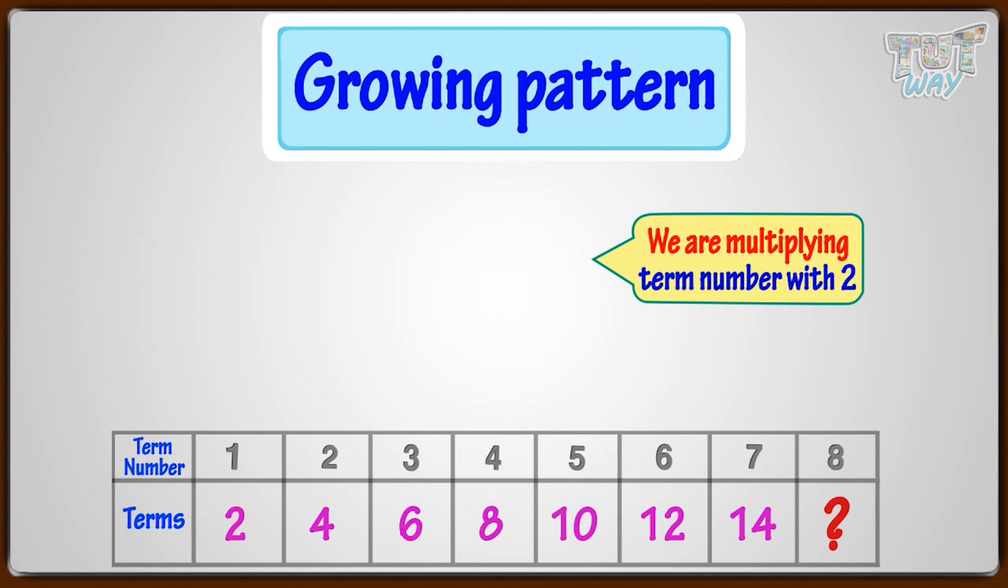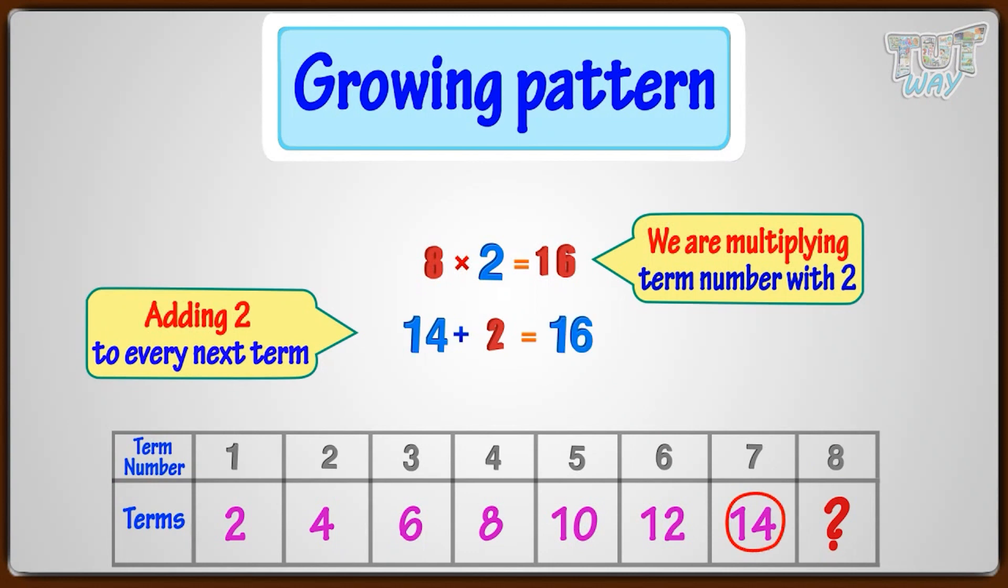So finding the next term or 8th term here, we can multiply 8 with 2. We can get 16. Or we can add 2 to the 7th term. That is, adding 2 to 14, we get 16.